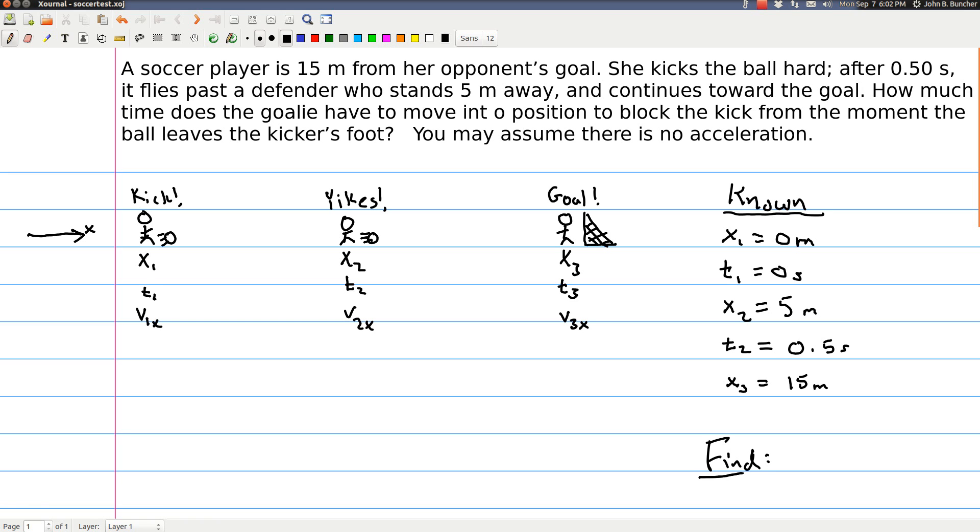And what we're trying to find, I always want to write this down too. We're trying to find how long the goalie has to move into position to block the kick from the moment the ball leaves the kicker's foot. So we're looking for the time difference. We're looking for t3 minus t1. Since we said t1 was zero, we're just looking for t3, which is nice.